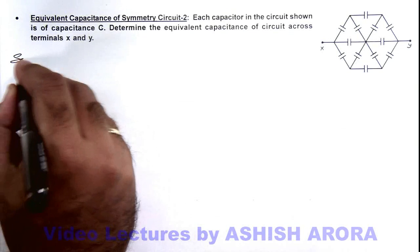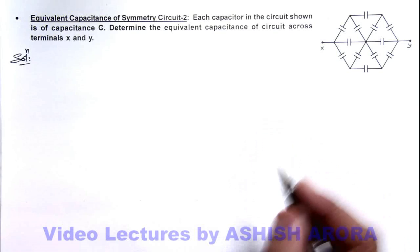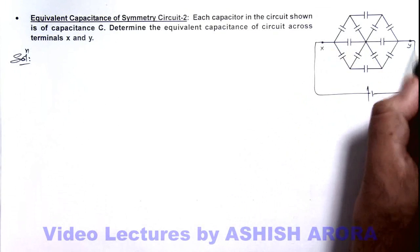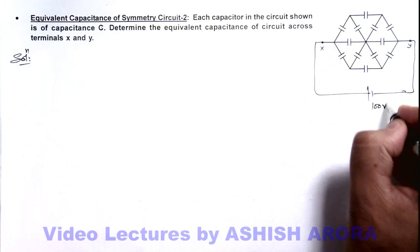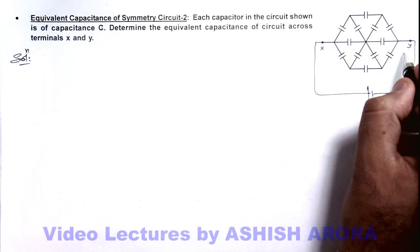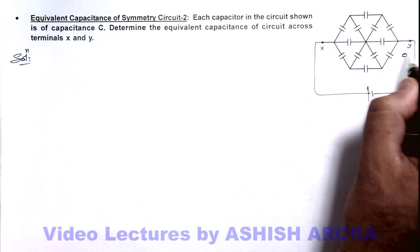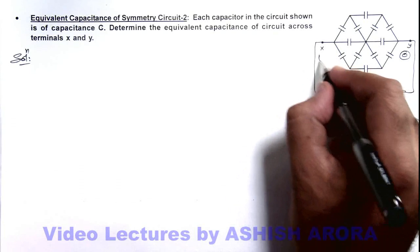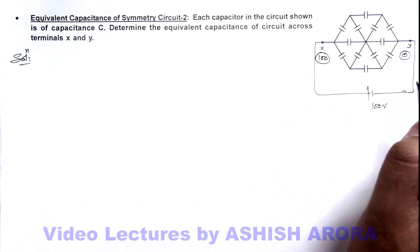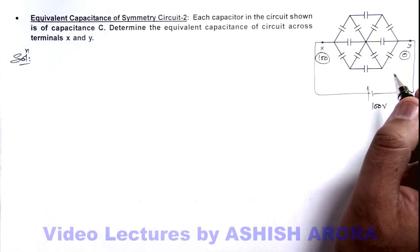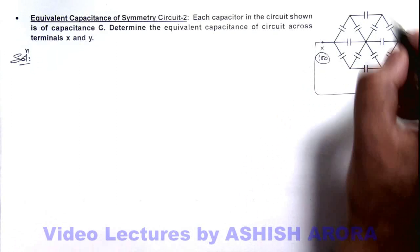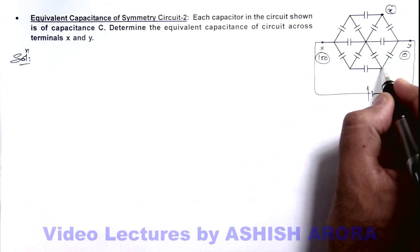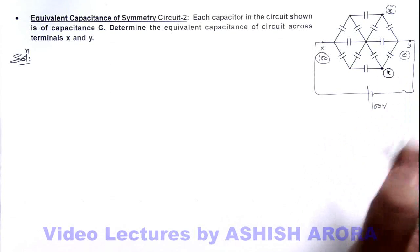We solve it by distribution of potentials, for which we connect a 100-volt battery across the circuit. We assume on the negative side of the battery the potential is zero, and on the higher potential side it is 100 volts. By symmetry, if at one node the potential is X, then obviously by symmetry the other corresponding node will also be at potential X.